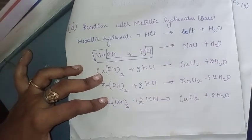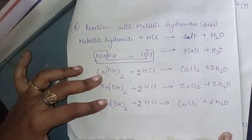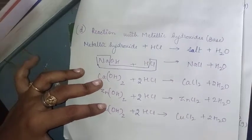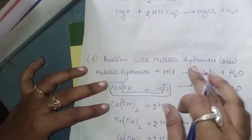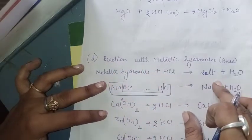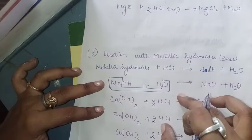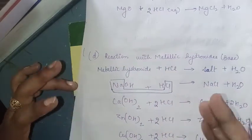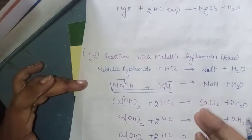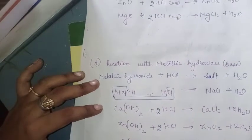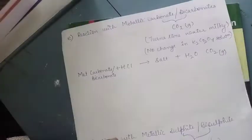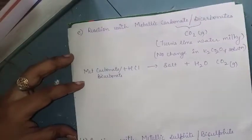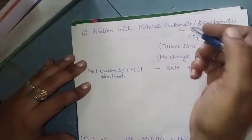Cu(OH)₂ + 2HCl → CuCl₂ + 2H₂O. To balance these equations, substitute 2 in front of HCl. The method is: first write down the word equation, then substitute the formulas, then balance the equation. Balancing is straightforward once you follow this approach.